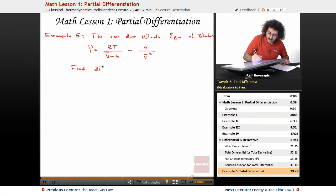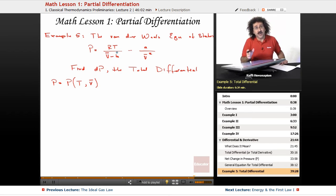Okay, find dP, the total differential. Let's be formal about this. P is a function of the variables T and V, right? So it's very important that you actually pick out your variables and know what your independent variables are.